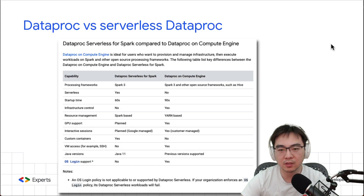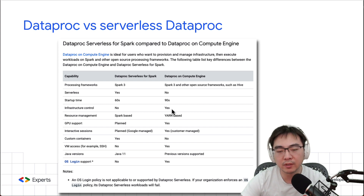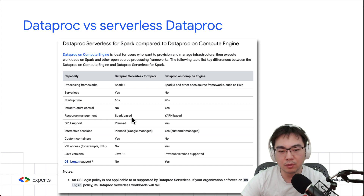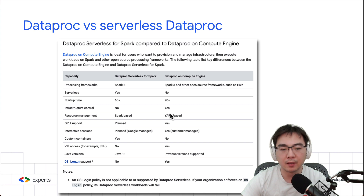What's the difference between Dataproc and the serverless one? It's actually not that much of a difference according to Google's comparison page. The biggest difference is infrastructure control — with serverless, you don't manage any infrastructure. You just submit the job, it runs, and it dies. With regular Dataproc, you need to create a cluster yourself and then submit jobs against it. The resource management in serverless is Spark-based, while the Compute Engine version uses YARN — similar to Cloudera Enterprise. Serverless does not support GPU, so if you need that, you have to use the cluster-based version.